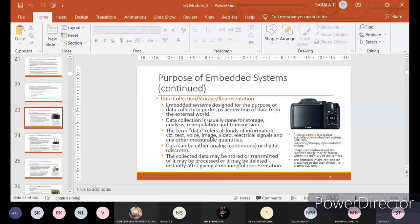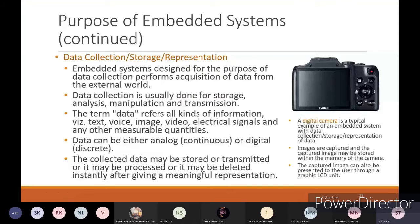A digital camera is a typical example of an embedded system with data collection, storage, and representation of data. The image is one of your primary data when you are using a digital camera.